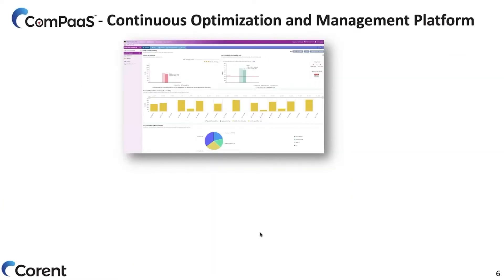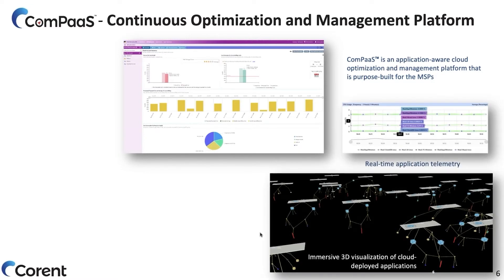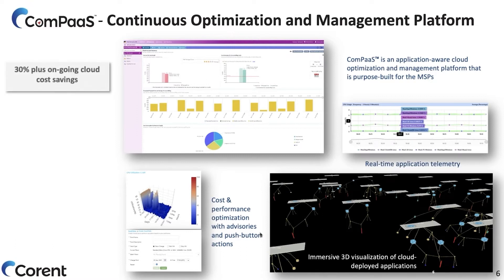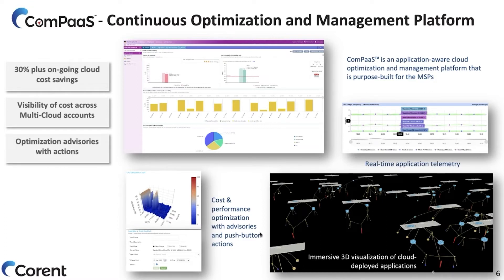Taking all this into consideration, we've put together the eCompass platform, which encapsulates all these ideas gathered from managed service providers. It is an application-aware platform that not only manages cloud resources, but gives you an application-centric view with real-time telemetry and visualization of applications and cloud resources. It is built with cost and performance optimizations — not just advisories, but actionable ones. With a click, you can execute those actions, starting with about 30% cost savings, and with visibility across multiple clouds and multiple accounts from different clouds managed simultaneously.